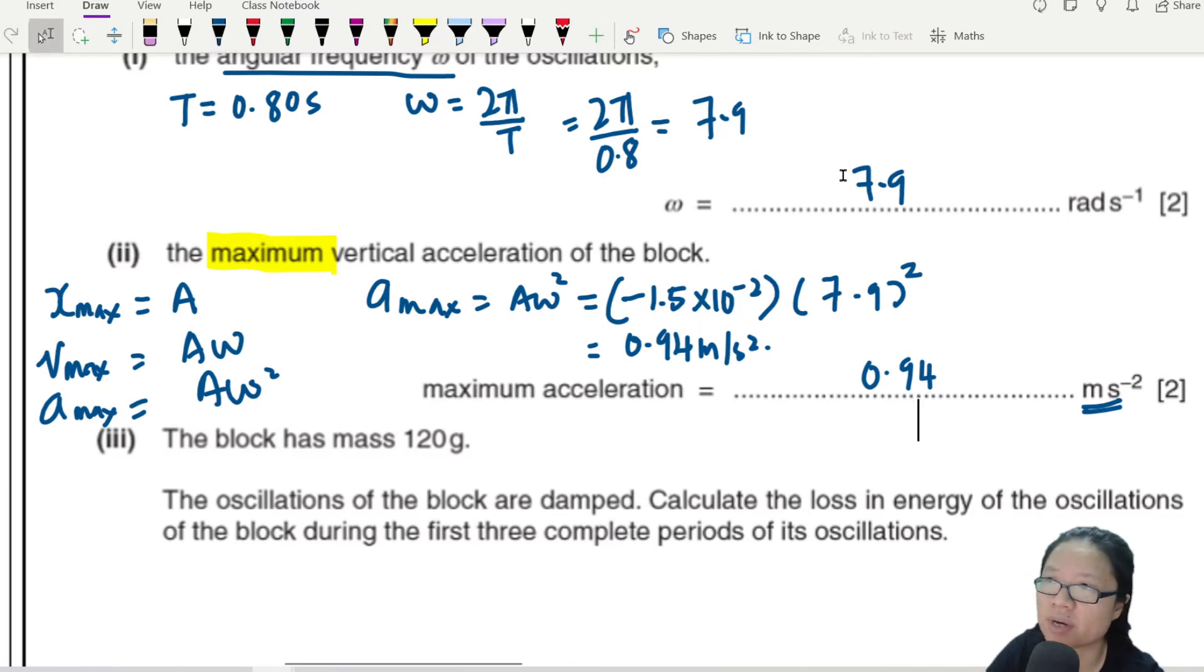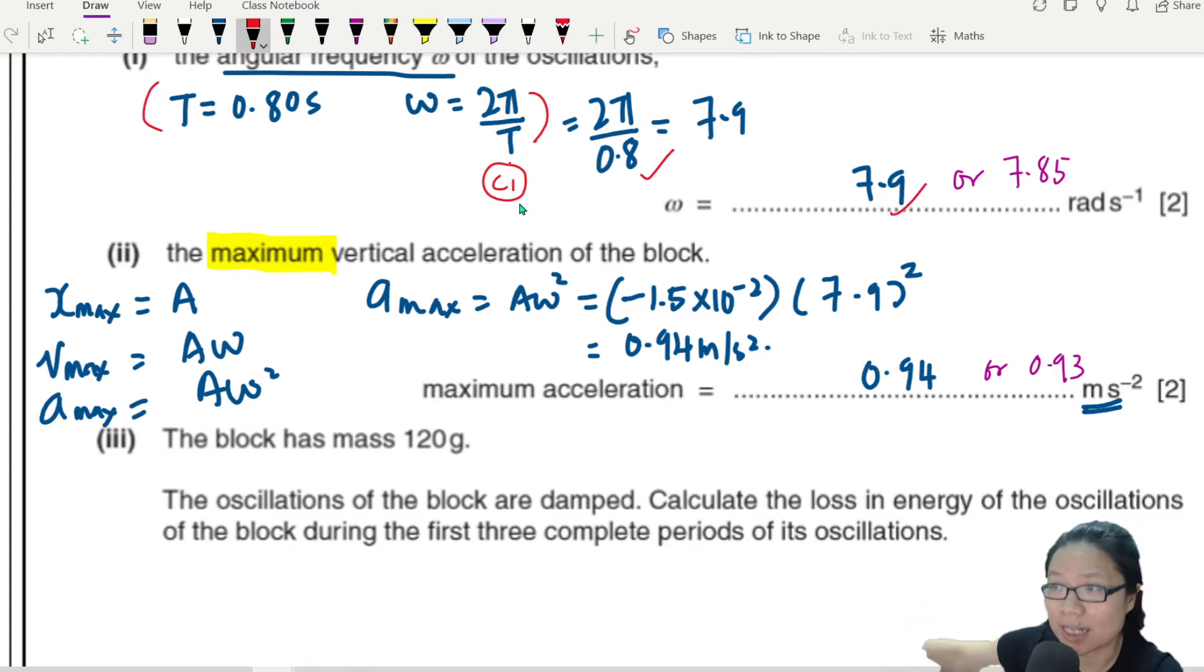Of course, if you take 7.85, then this one would be 0.93. Whenever you do this kind of question, it is not the actual answer that is important. That is the only thing that we look at. We look at things like, did you recall the right equation? So if I see the right equation here, I'll give you C1 already. Did you show the substitution into the right equation leading to the right answer to the right significant figures? So this is A1 and done deal. Then when you transfer the answer over, I will just see whatever you write. If you put 7.9 here, I understand that 7.9 is from here.